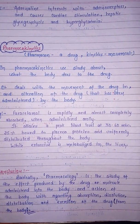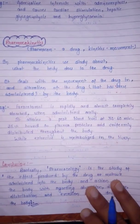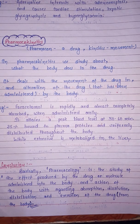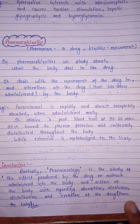For example, paracetamol is rapidly and almost completely absorbed when administered orally. It attains a peak blood level at 30 to 60 minutes, 25% of it is bound to plasma proteins, and it is uniformly distributed throughout the body, while being extensively metabolized in the liver.